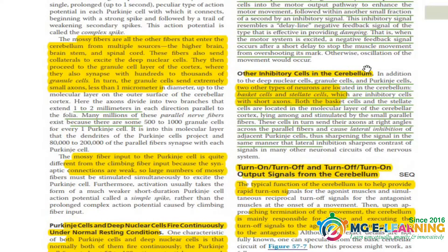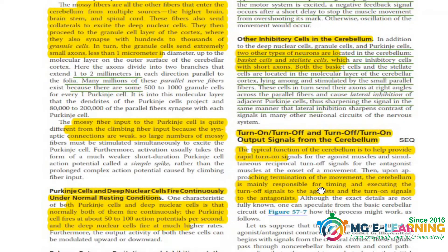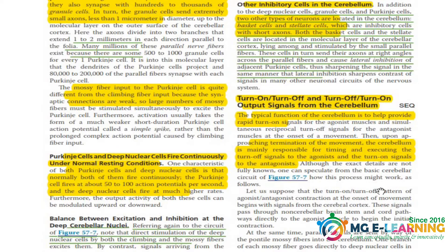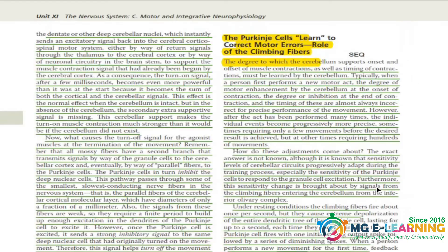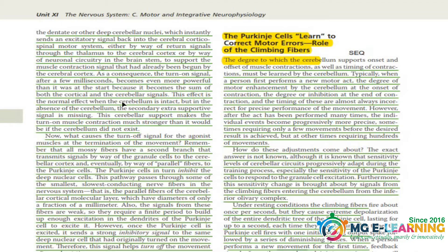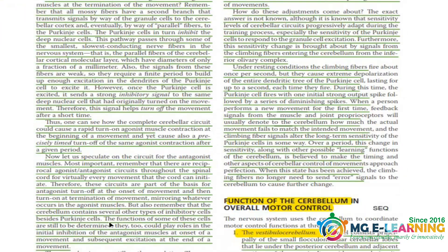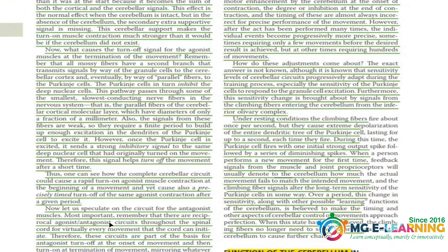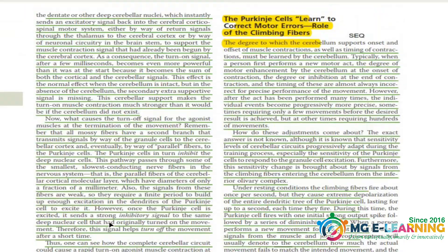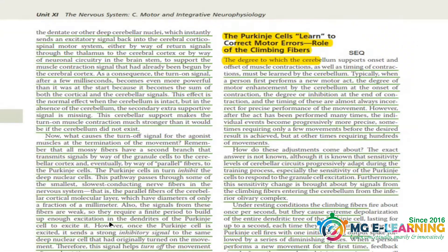Other inhibitory cells are also important for your MCQs. Next is another SEQ: turn on and turn off output signals from the cerebellum — this is important for your understanding and can also come in the paper for your SEQ. You have to read all this text and understand it for your SEQ point of view.